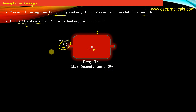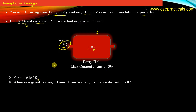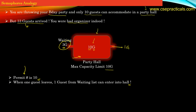Here the permit number is 10 — the maximum number of guests allowed to enter into this party hall is called the permit number. When one guest leaves, one guest from the waiting list can enter into the hall. If one guest leaves and is done with the party, the total number of guests in the hall is now 9, but the maximum capacity is 10, so one guest from the waiting list can enter, leaving 2 guests waiting at the gate.